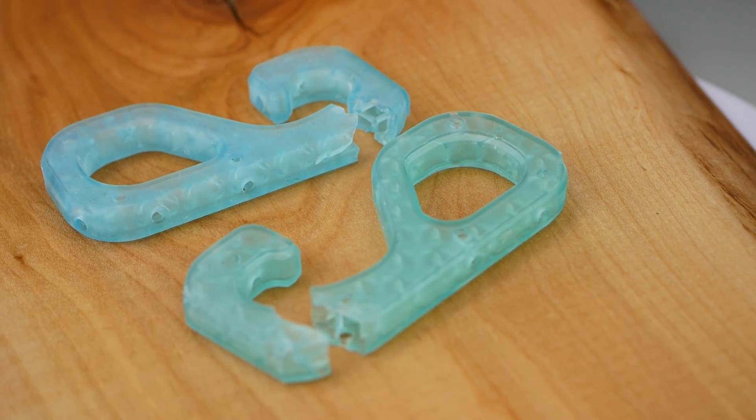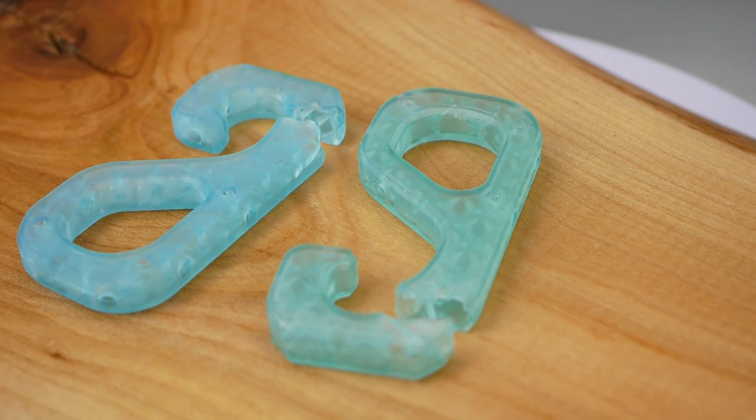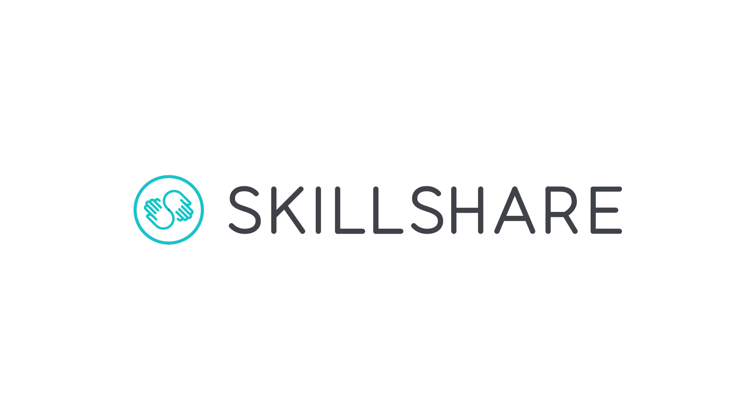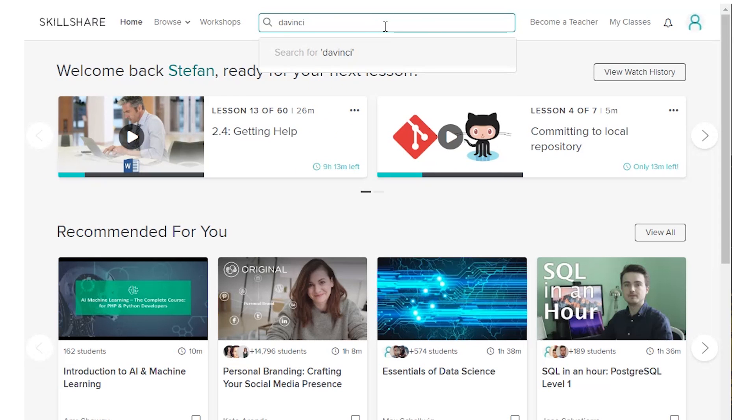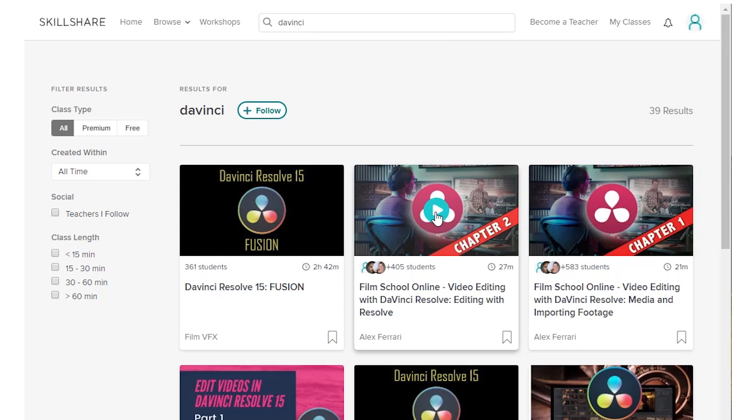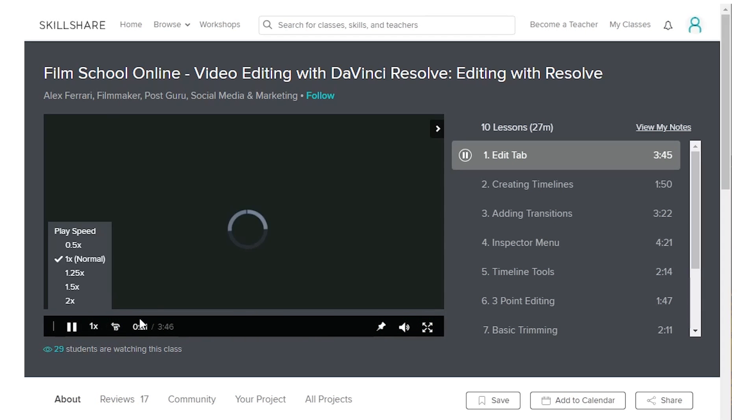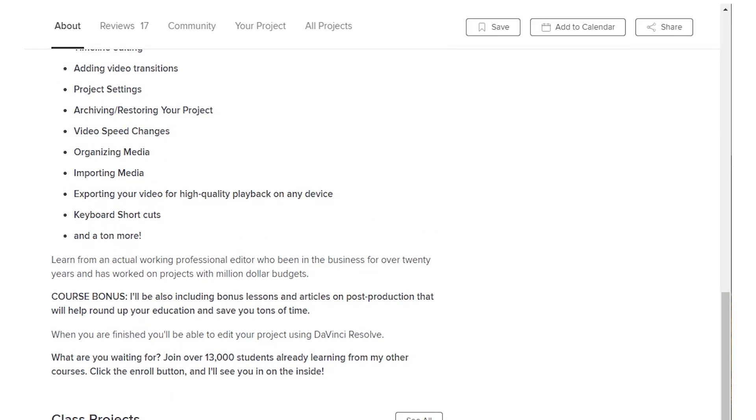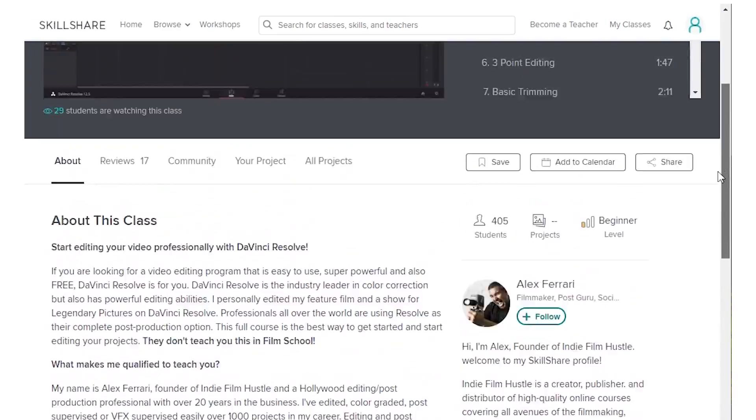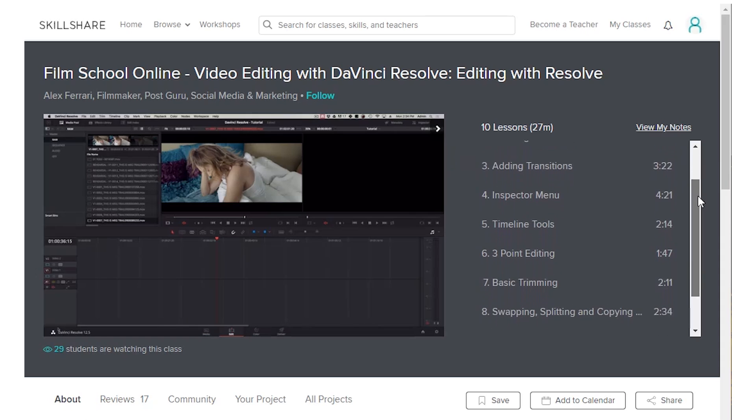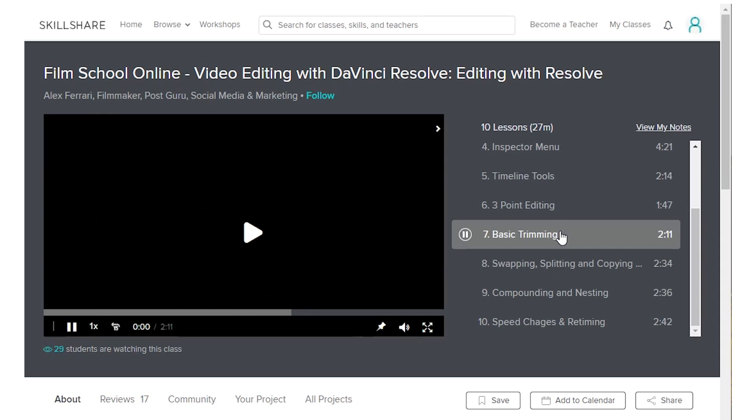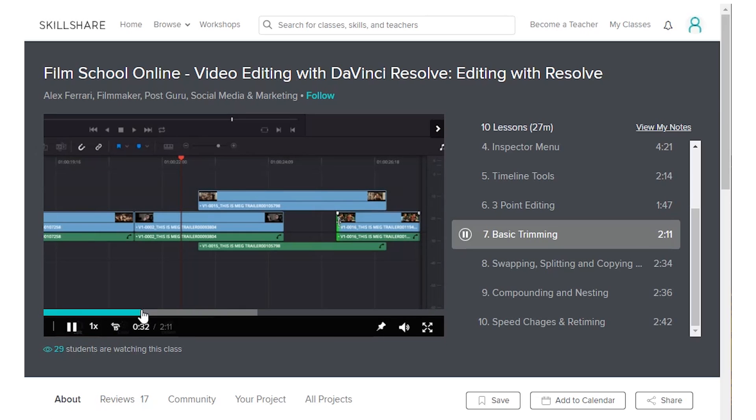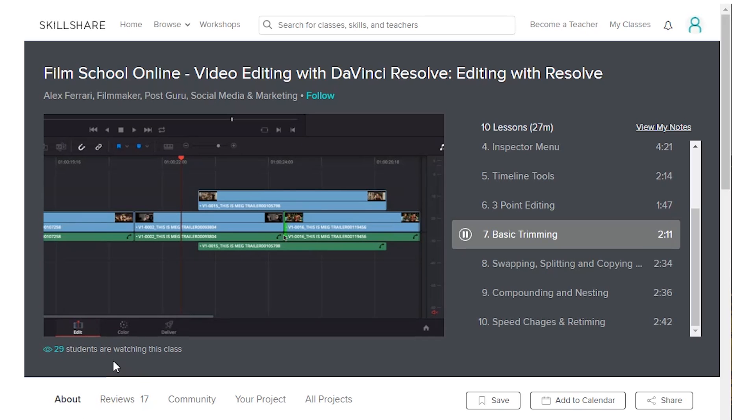Before we get to the summary, some words on today's sponsor Skillshare that helps me besides my awesome patrons to spend the necessary amount of time on these investigations. Skillshare is an online learning community for creators with more than 25,000 classes in design, business and more. A premium membership gives you unlimited access so you can join classes and communities to reach your goals for this year. I'm currently looking into replacing the expensive and buggy Adobe Premiere Pro with Blackmagic's DaVinci Resolve and Skillshare provides professional classes to learn very efficiently. Skillshare is super affordable and an annual subscription is less than $10 a month. Join the more than 7 million creators and if you're one of the first 500 to use the link down in the description you'll get a 2 month free trial.